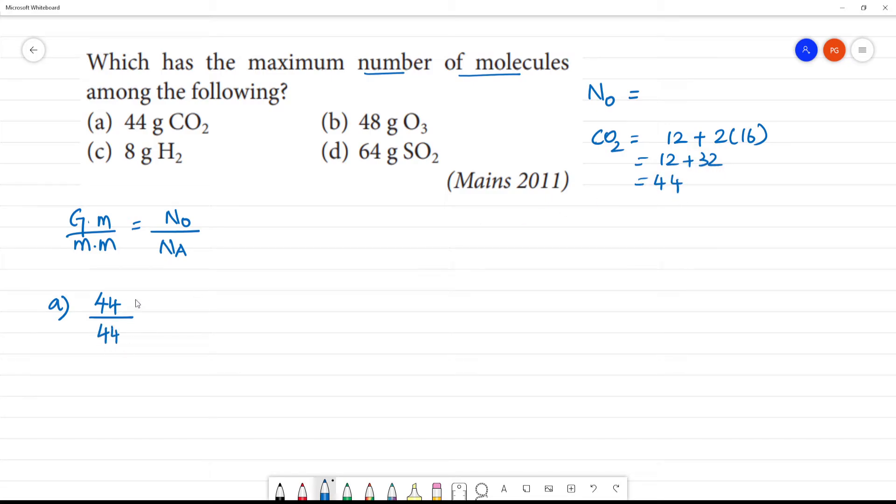So 44 grams divided by 44 grams per mole equals N₀/Nₐ. These cancel out, so the number of molecules of carbon dioxide equals Nₐ, Avogadro's number.